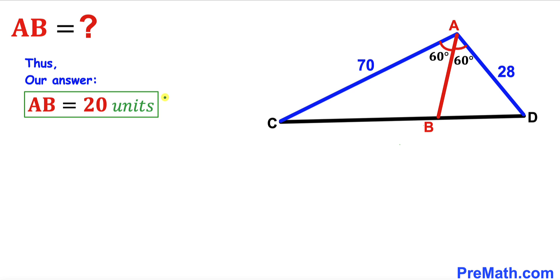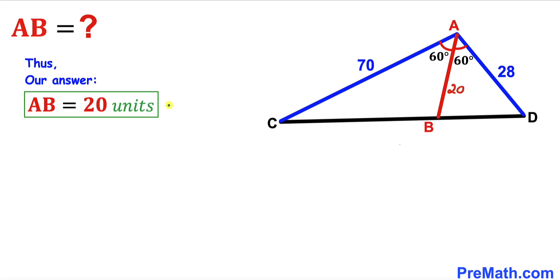After all the manipulation and calculations, our AB length turns out to be 20 units. That is our final answer. Thanks for watching and please don't forget to subscribe to my channel for more exciting videos.